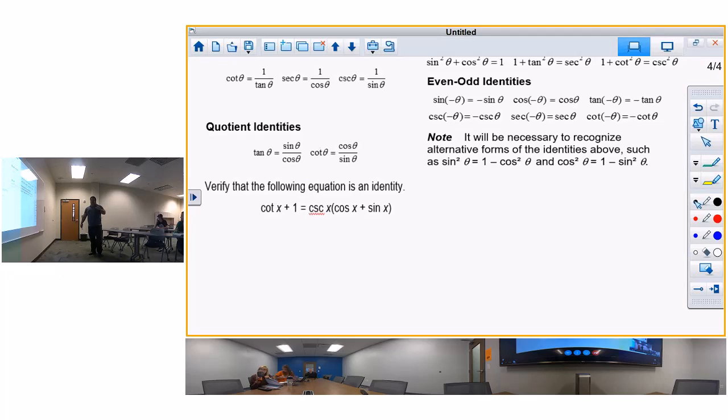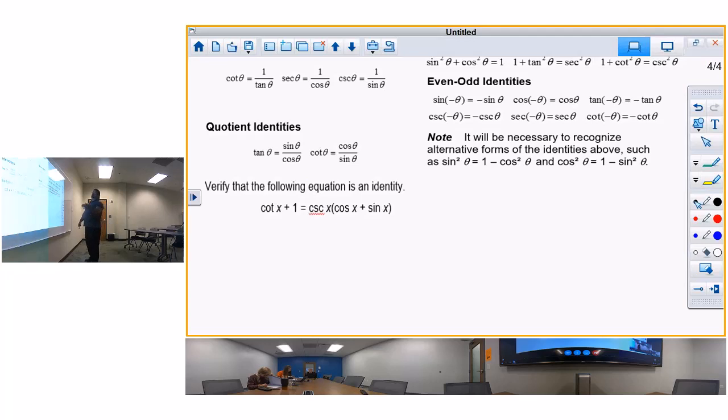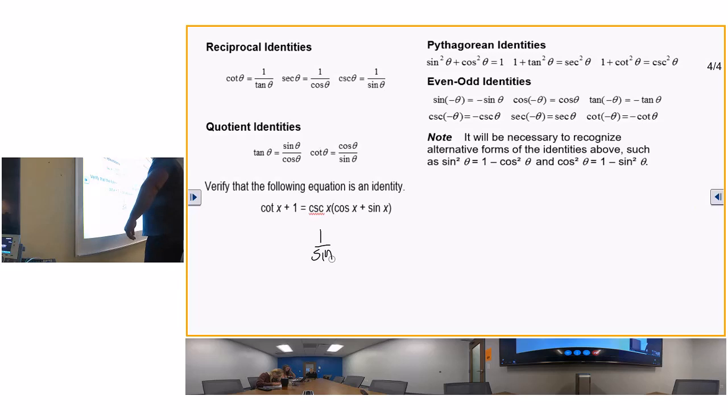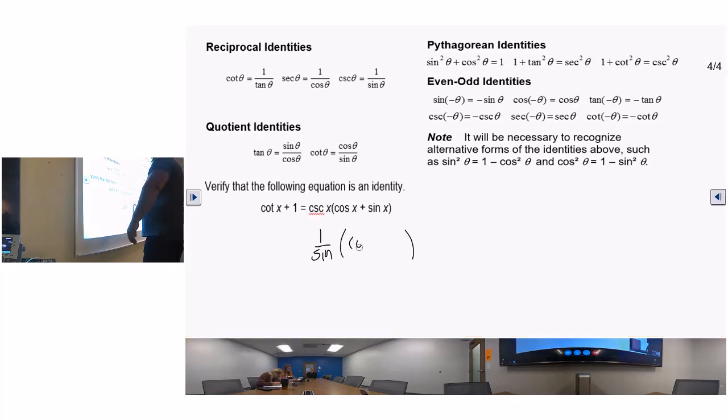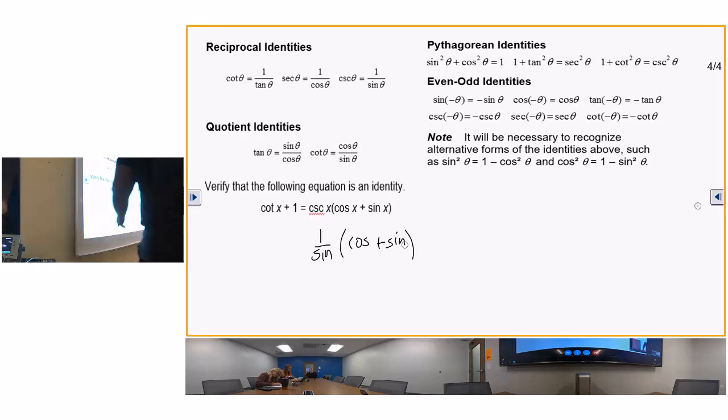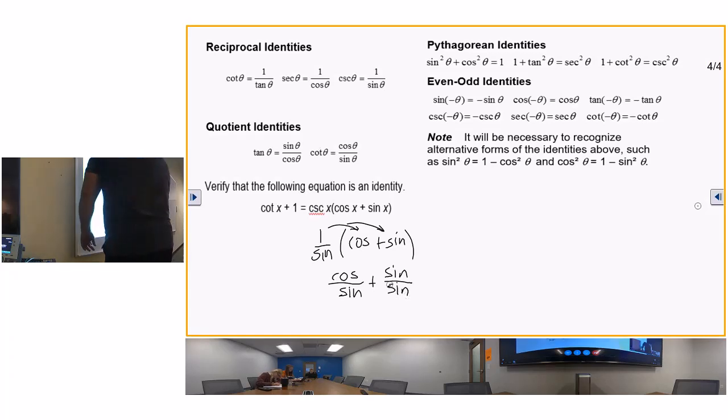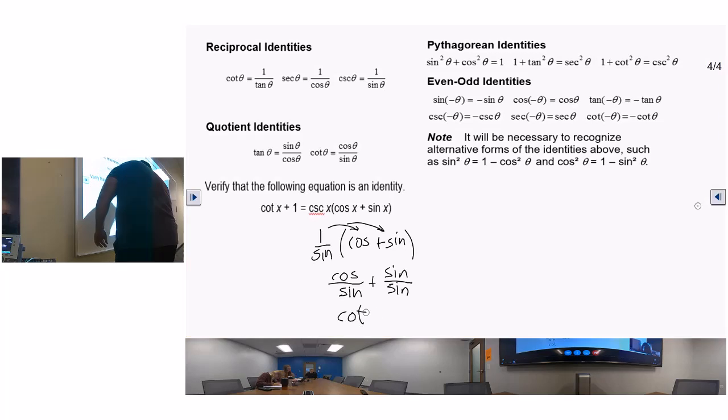But that was proven to me wrong when they did it on the other day. So maybe you might want to go with the most complicated. The most complicated is the right hand side, so I'm going to work with it. First thing you want to do is you want to try to rewrite all of those, as a general rule, in terms of sine and cosine, or secondly in terms of identities.